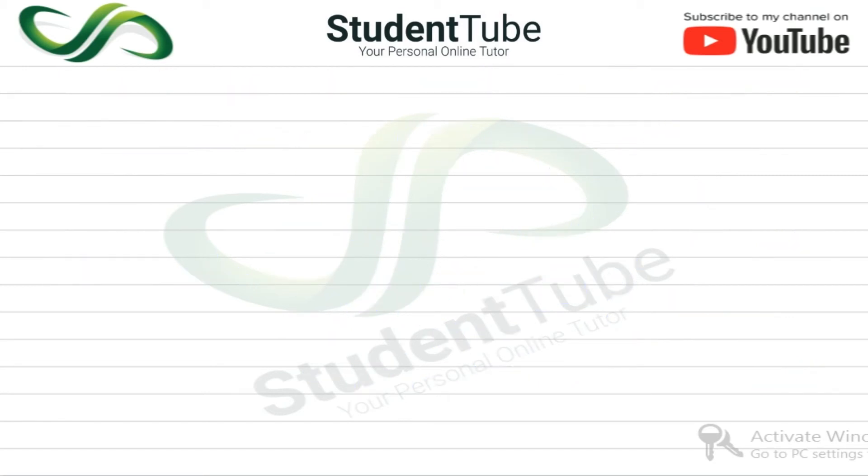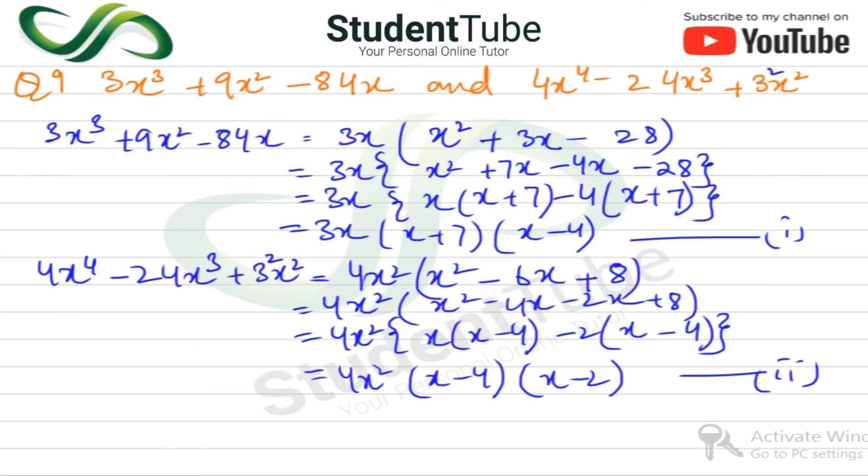Now we have to find the LCM. So we will find the HCF. The HCF is what is common in both, approximately. So we take x from here, and we get x - 4, which is common in both. So this is our HCF.